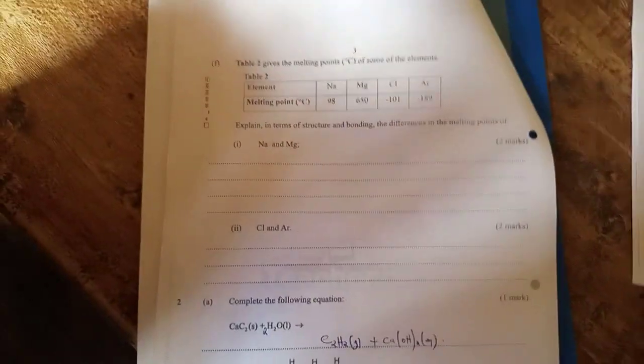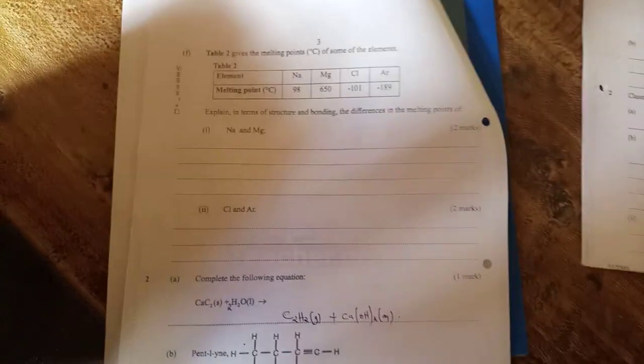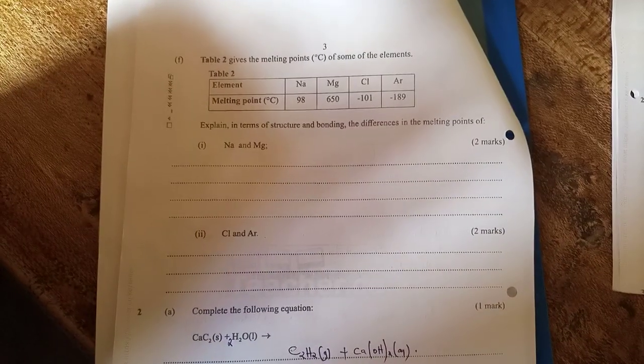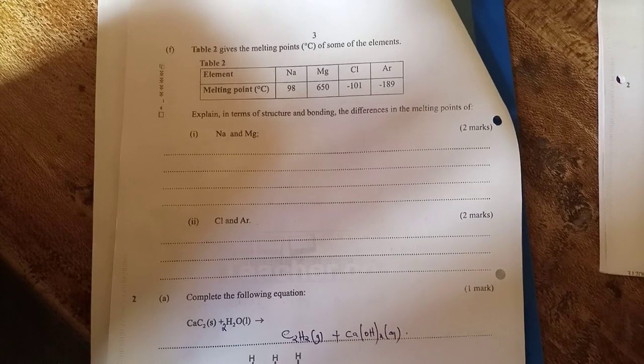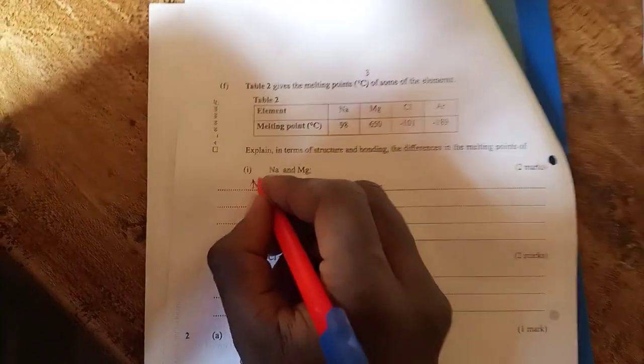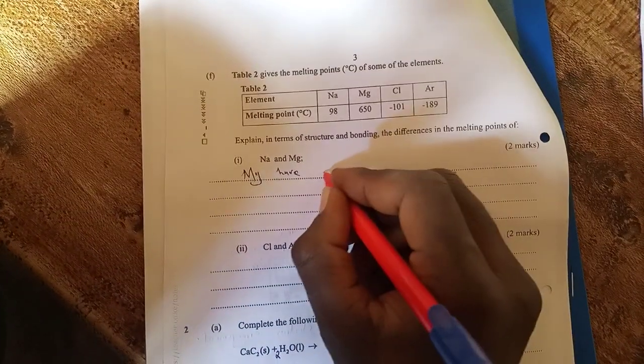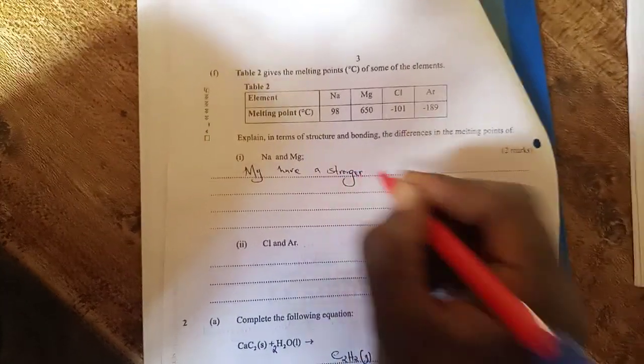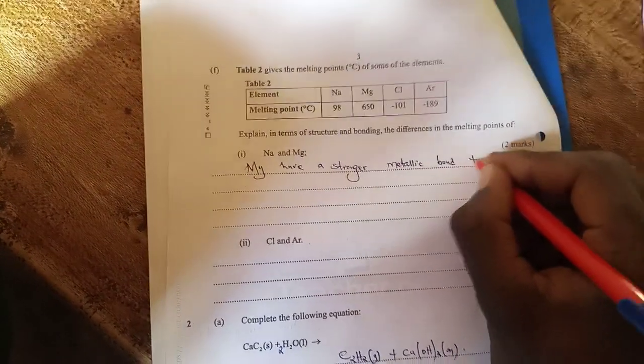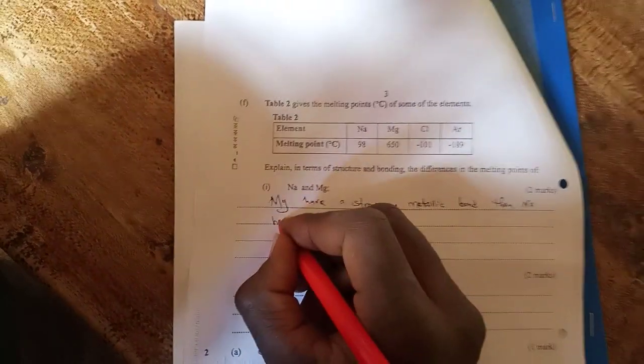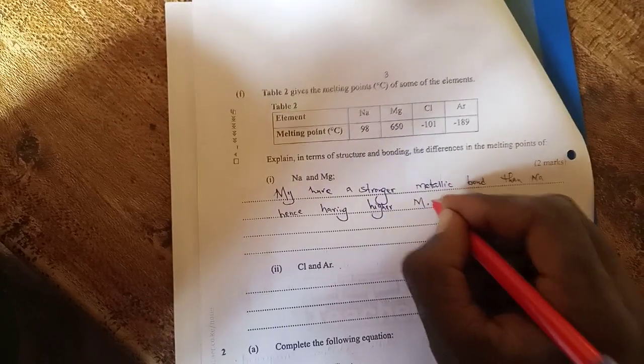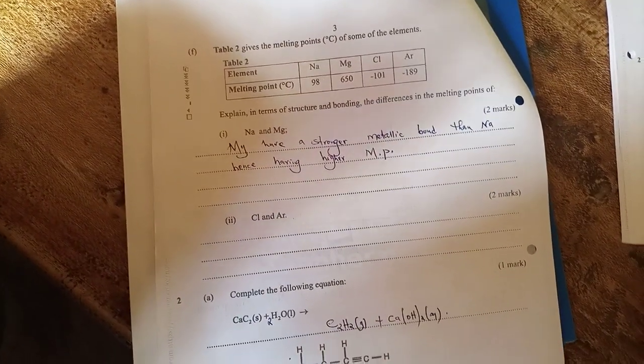Next, is a table of some elements. We are asked to explain in terms of structure and bonding, the difference in melting point of sodium and magnesium. This is a trend across a period. Magnesium has a shorter atomic radius compared to sodium. So the bonds are stronger in magnesium compared to sodium. Magnesium will have a stronger metallic bond than sodium, hence having higher melting points. The structure is a metallic structure. The bonds are metallic bonds.